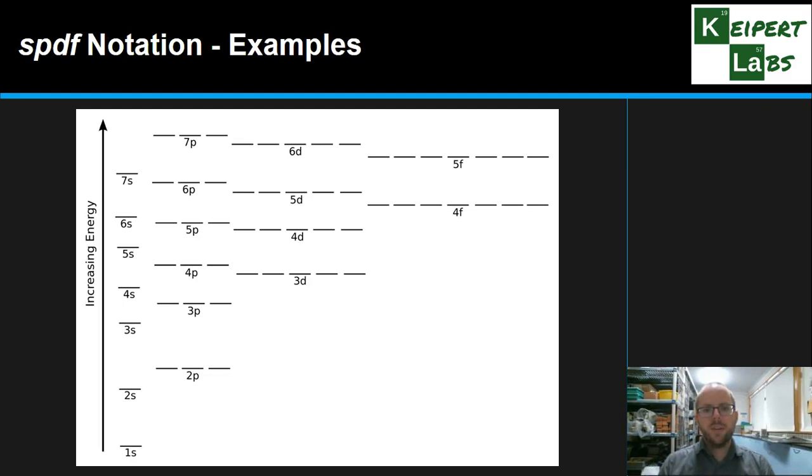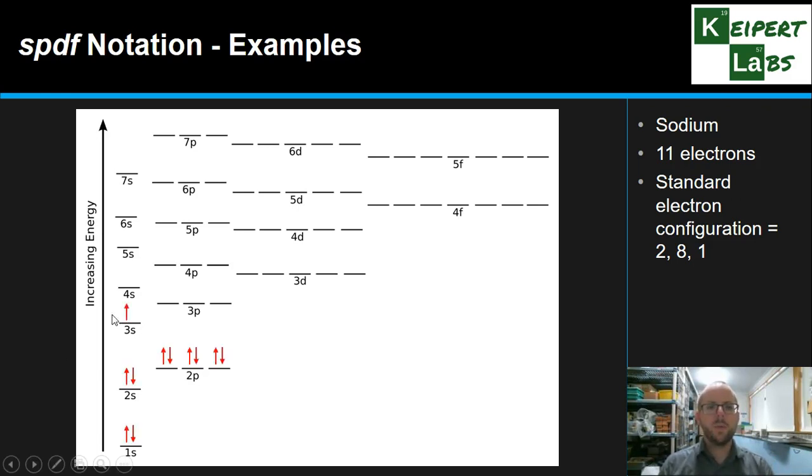Okay, so now if we think about our sodium atom that we drew an example of before. So just reminding you that it has 11 electrons, and that we had our standard electron configuration of 2, 8, and 1, we saw that just before, and that this is where we would position the electrons in our orbital filling diagram that we've seen before.